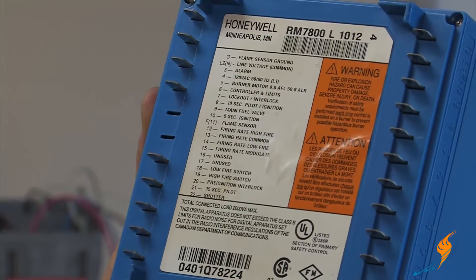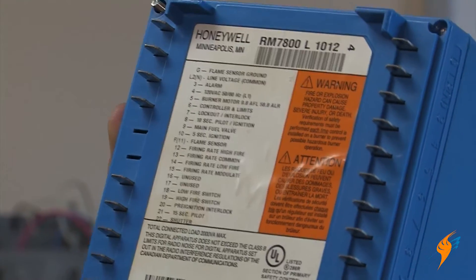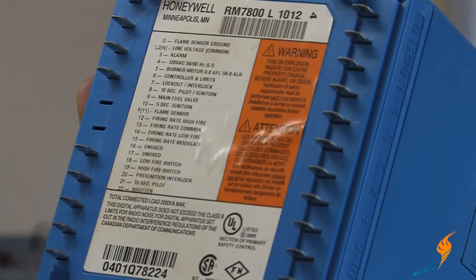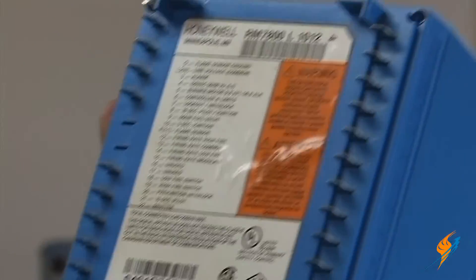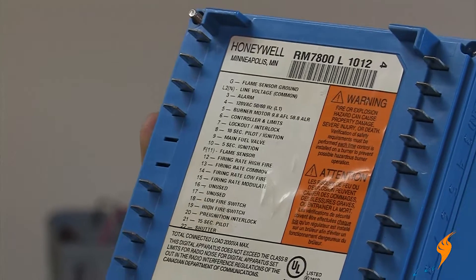Once it's lit off the burner and released to auto or modulate, it's jumpering the 13 to 15 terminal, which lets other components on the boiler command the firing rate. And that's what we're going to talk about for the most part.